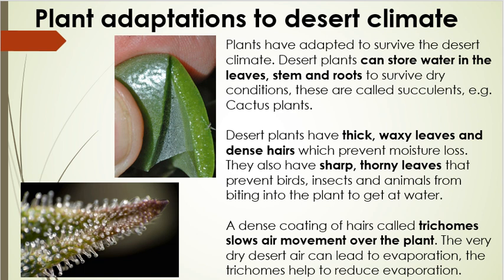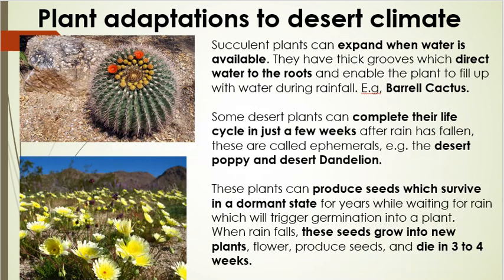At the bottom left of the slide is an interesting picture showing a coating of hairs on a leaf called trichomes. Trichomes slow air movement over the plant — the hot, dry desert air moving quickly can cause evaporation, and plants don't want to lose that valuable water. The dense coating of trichomes slows air movement around the plant and prevents evaporation, helping the plant conserve water.